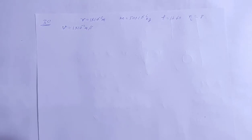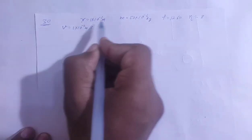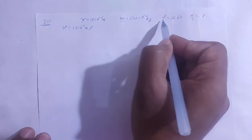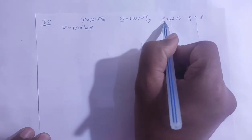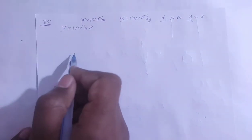The density of glycerin is given and the coefficient of viscosity is given. The radius and mass of the sphere are also given, along with the speed.